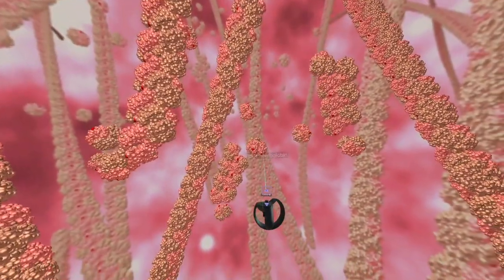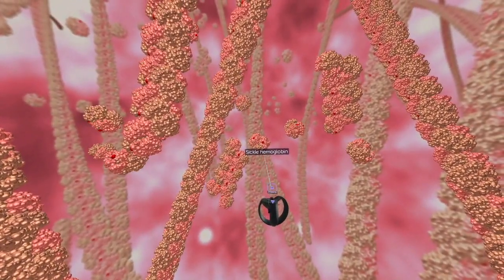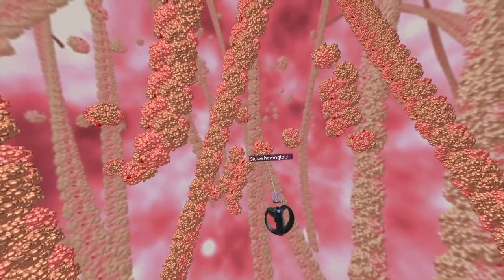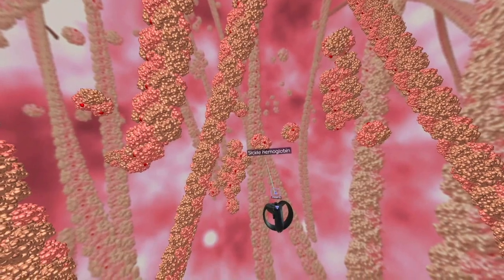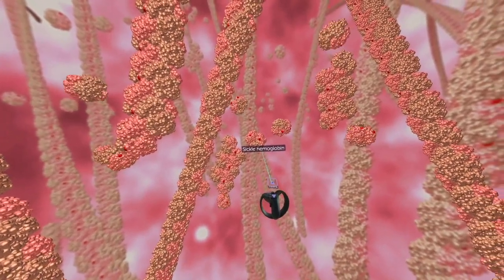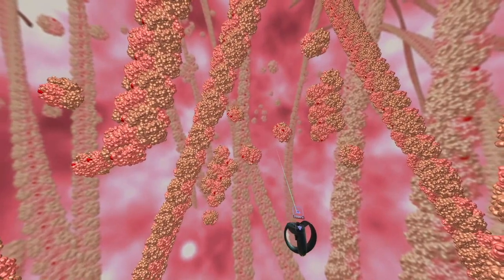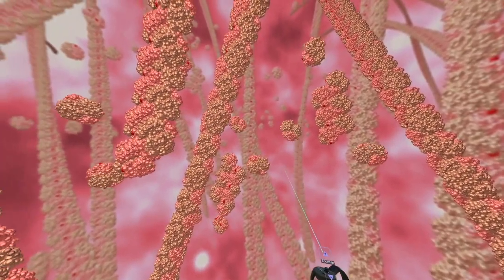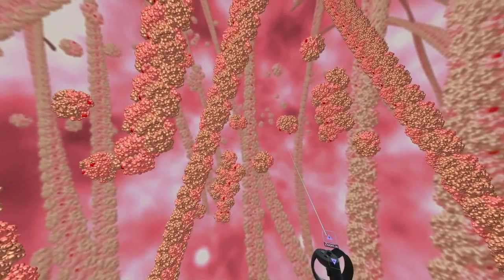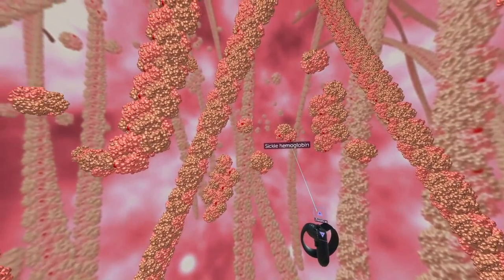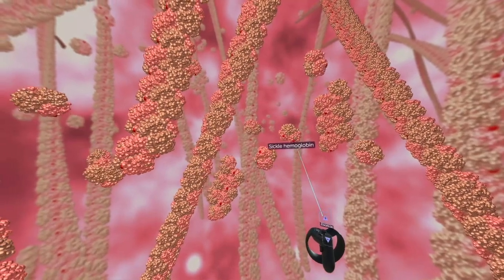This is hemoglobin - the protein that's in all of your red blood cells that helps carry oxygen through your body. Hemoglobin is really supposed to look like these free-floating, bopping around happily molecules. But in sickle cell patients, there's this mutation which you can see right here.